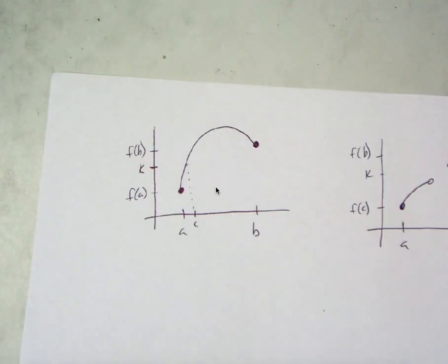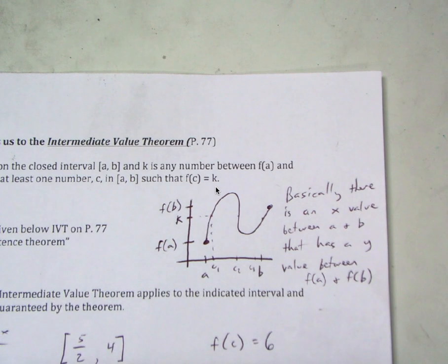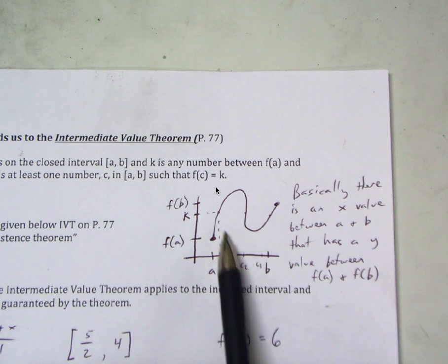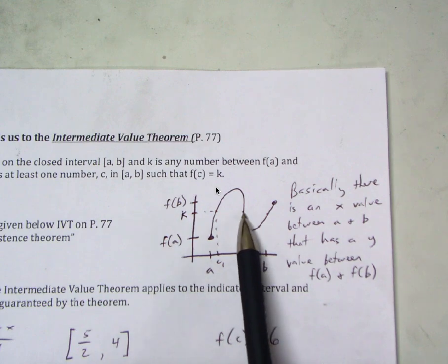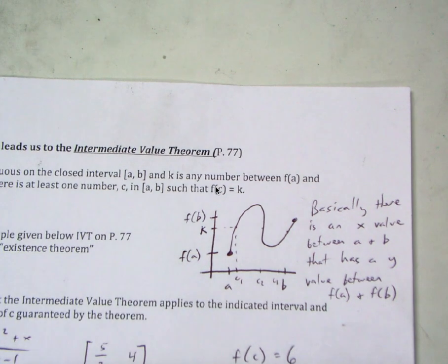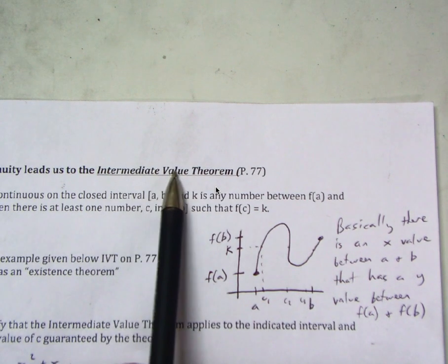Now it just says there's at least one. Notice there can be many — if I pick this Y value, this X value corresponds with it, and so does this one right here, and this one too. So there are multiple X values that could correspond. But again, this is an existence theorem — it's just saying it's going to happen. And this is called the Intermediate Value Theorem.